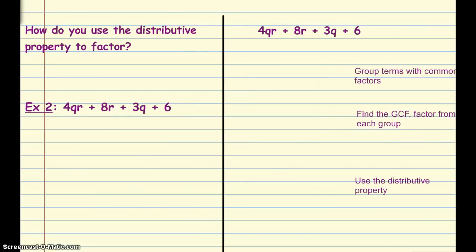So let's take a look at our next example. So how do you use the distributive property to factor? In example two, we have 4QR plus 8R plus 3Q plus 6. As I look at this polynomial, I notice that I can pull both a 4 and an R out of this first one. So I'm going to group 4QR plus 8R together. And I also know that in 3Q plus 6, I know that I can end up taking a 3 out of both of those terms. So I'm going to group them together with parentheses.